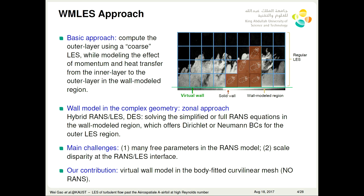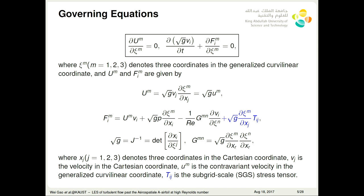When it comes to the complex geometry, most of the wall model in the literature are hybrid RANS-LES and DES. It is solving the simplified or full RANS equation in the wall model region, and this will offer the Dirichlet or Neumann boundary condition for the outer LES region. But there are some challenges for such kind of method. First is that there are more or less some free parameters in the RANS model. Another problem is the so-called scale disparity at the RANS-LES interface. Our contribution is to develop the virtual wall model in the body-fitted curvilinear coordinates. That means there's no RANS and no free parameters in our model.